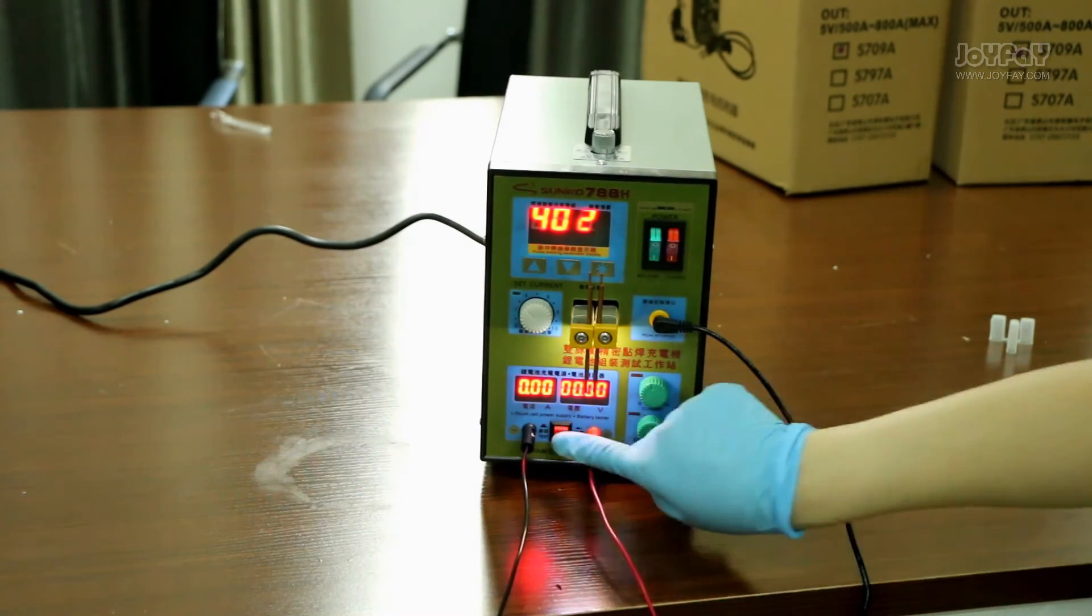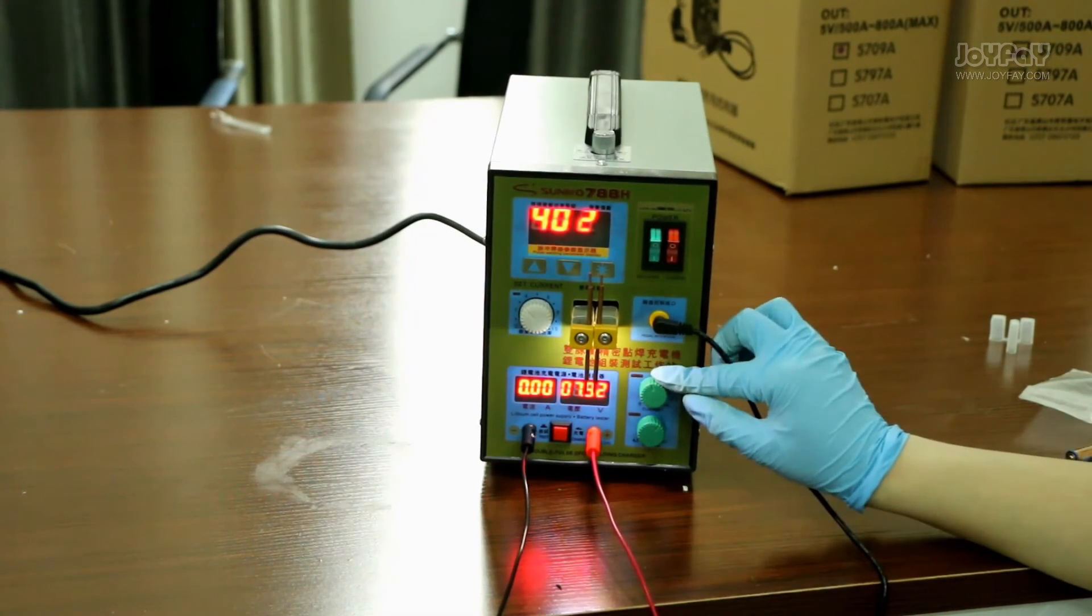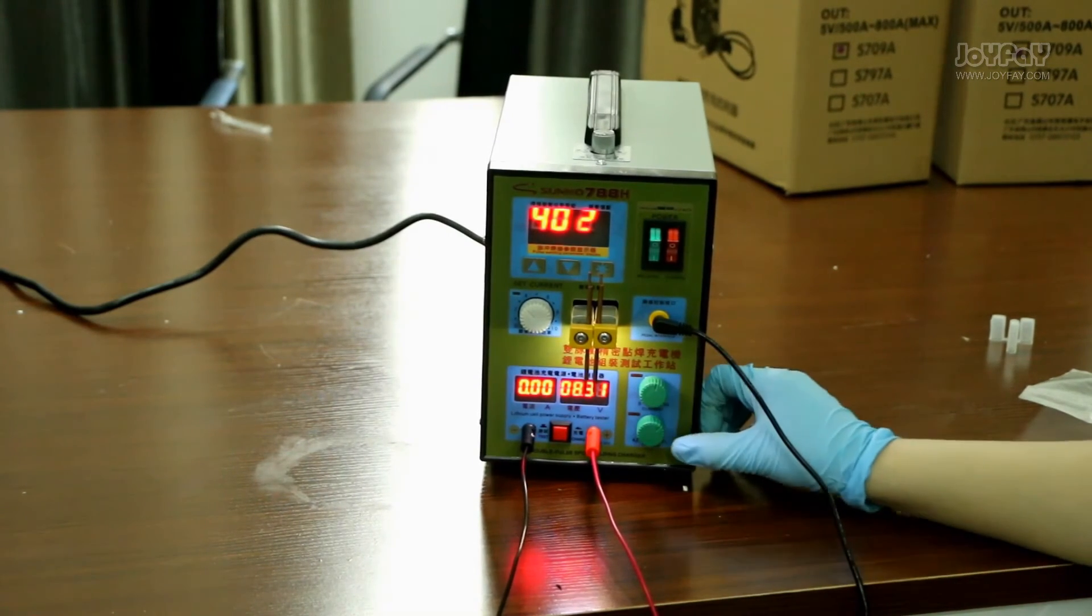Now press the red button at the bottom, and you can see that it is charging. Turn the green buttons to set the charging voltage and current.